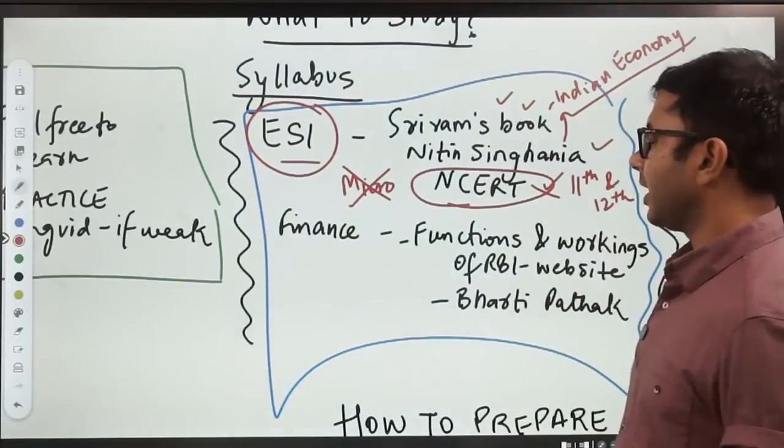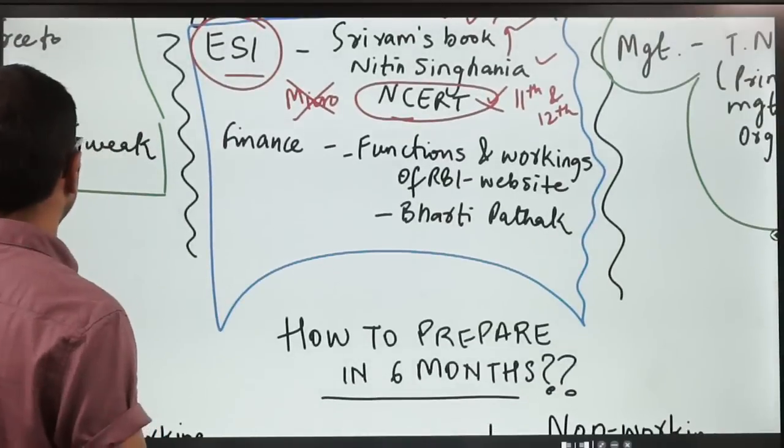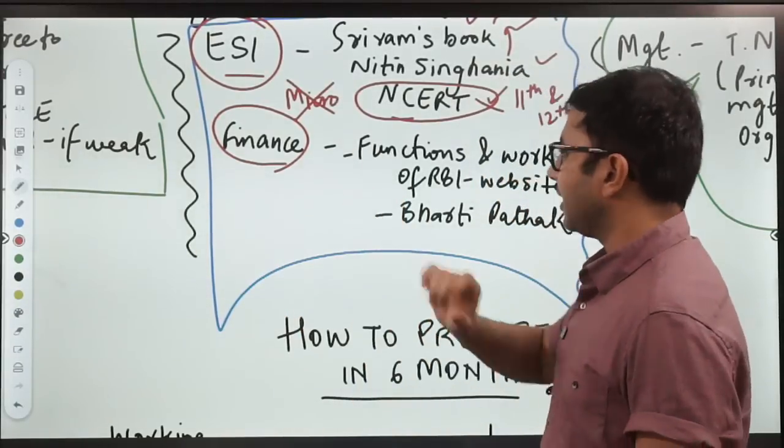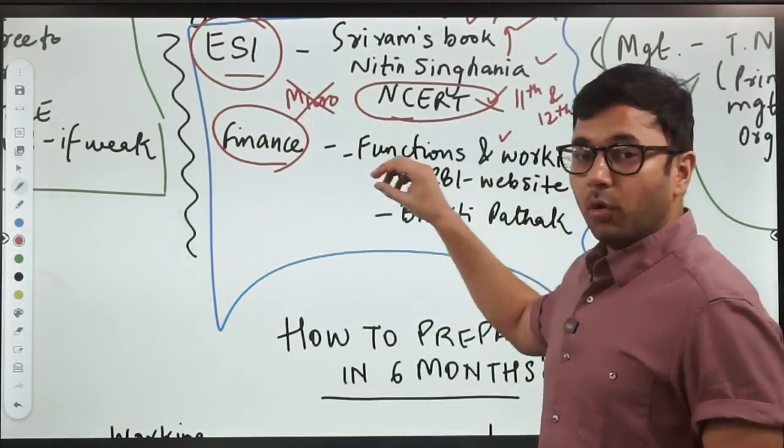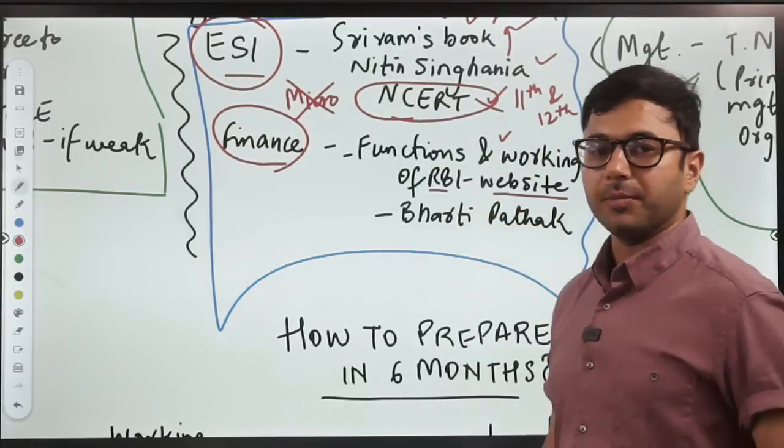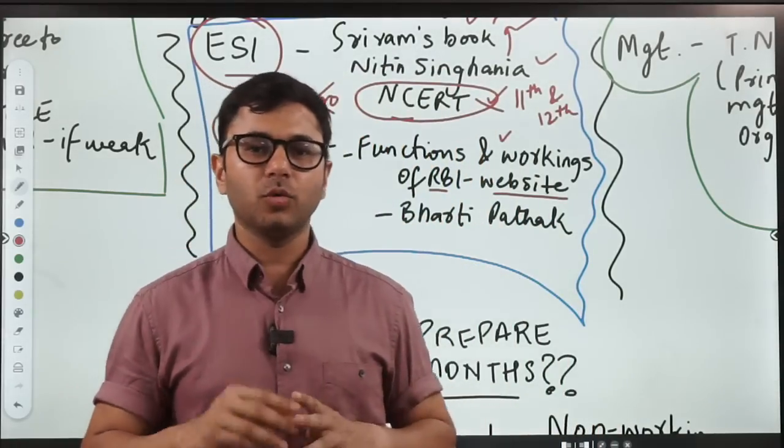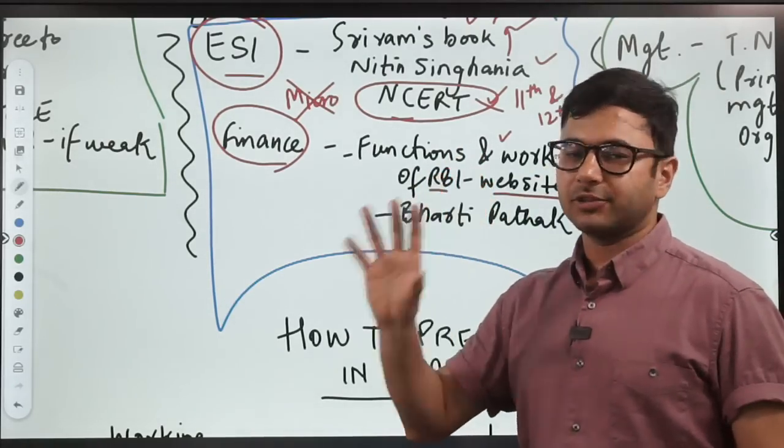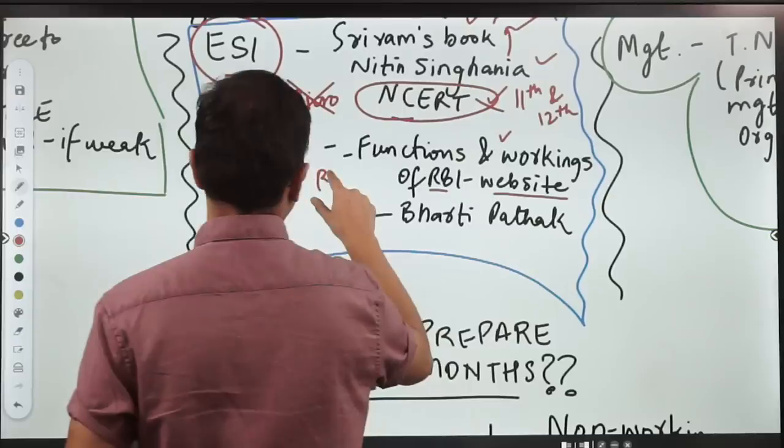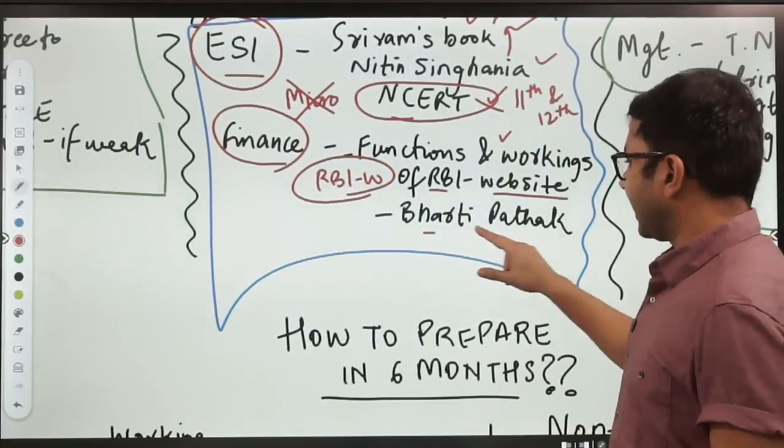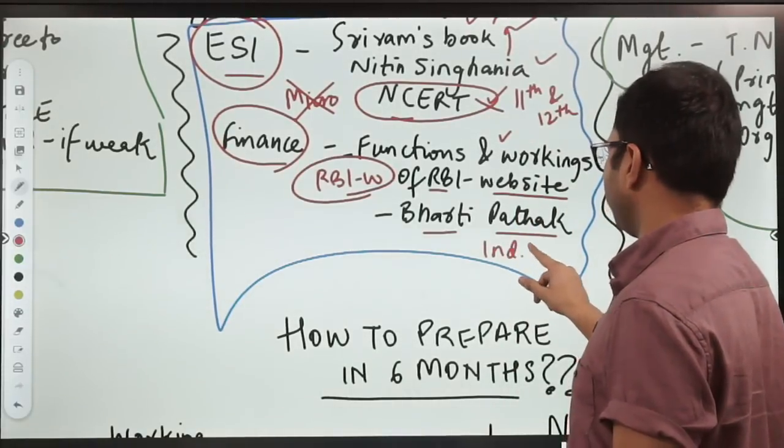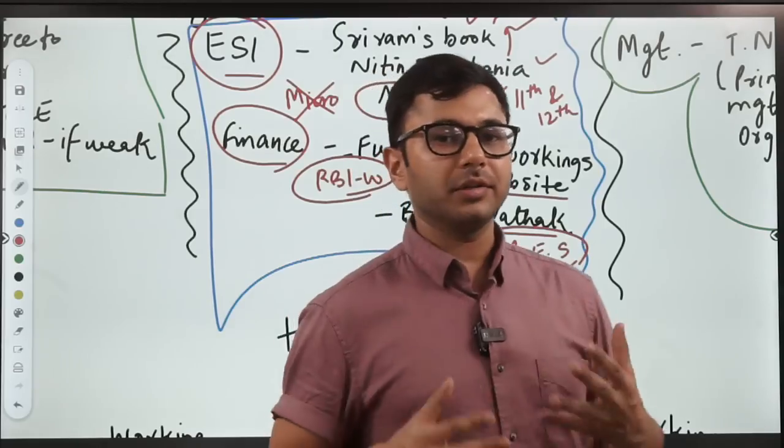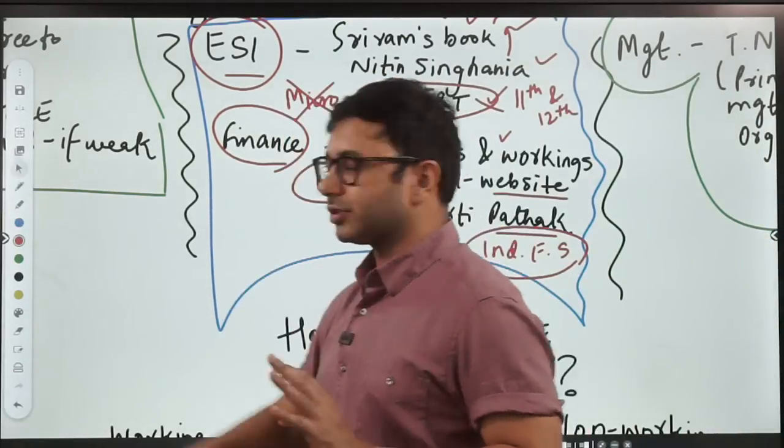When you come to finance, there are two sources that you can use. You have to cover the syllabus of finance plus current affairs. Number one, there is a book or PDF called Functions and Workings of RBI which is available on RBI website. Your first objective is to cover this. Second, Bharati V Pathak has a book called Indian Financial System, IFS. You can just google it, you'll find the book easily. This is a good source to cover the core syllabus of finance.